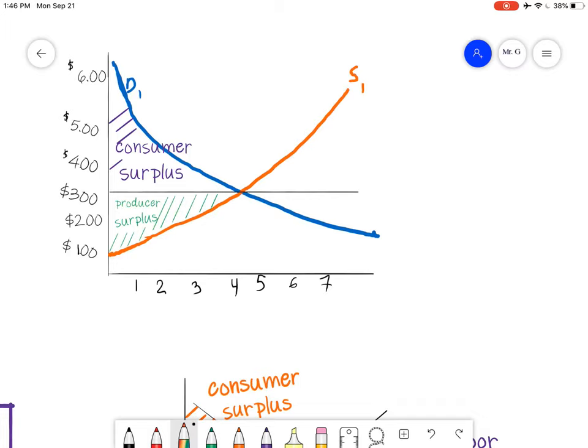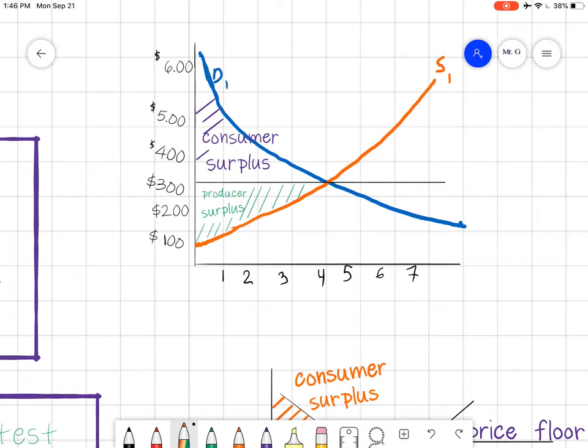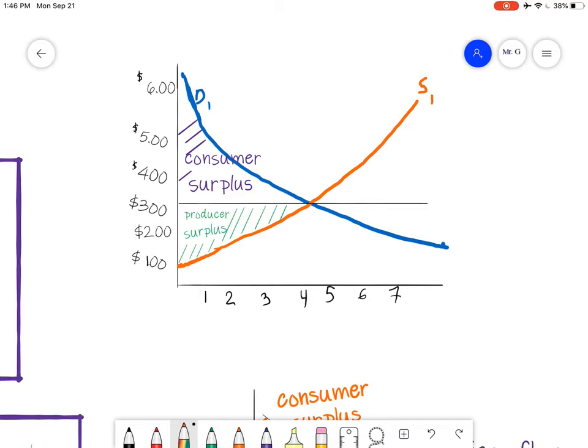And so once again, $4 is going to be the quantity at $3. And so all that area below the equilibrium line and then above the supply line, that is the producer surplus. That's extra money that essentially they're getting from what they were willing to sell. And so if you notice, this is for an equilibrium market. And you notice there's only consumer surplus and producer surplus.